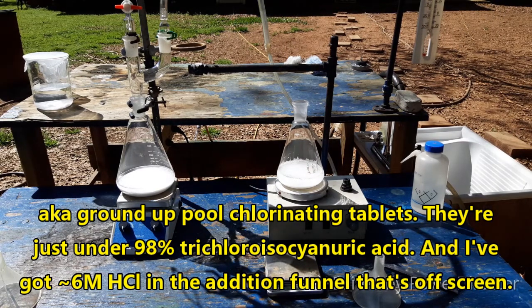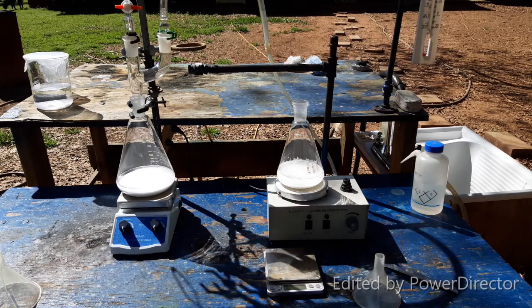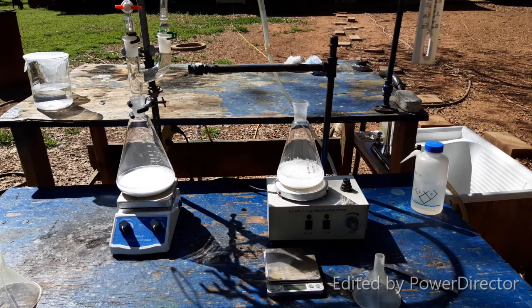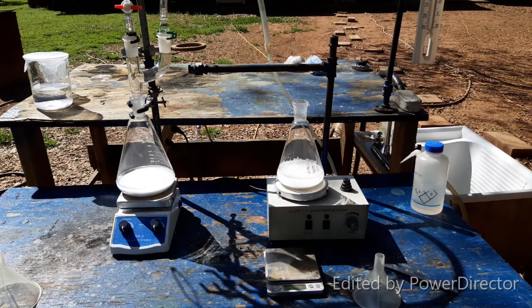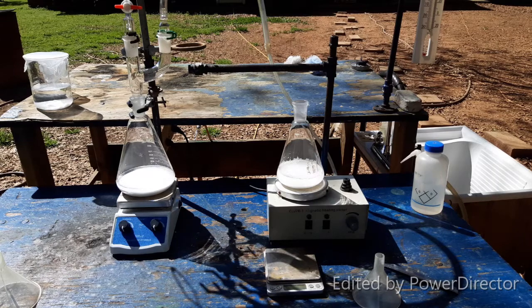I'm going to put some hydrochloric acid in the addition funnel and drip it in there to generate the chlorine gas, and then I will just bubble the chlorine gas through the suspension of mercurous chloride while it's stirring, and I guess we'll turn on the heat since that's what I did last time.